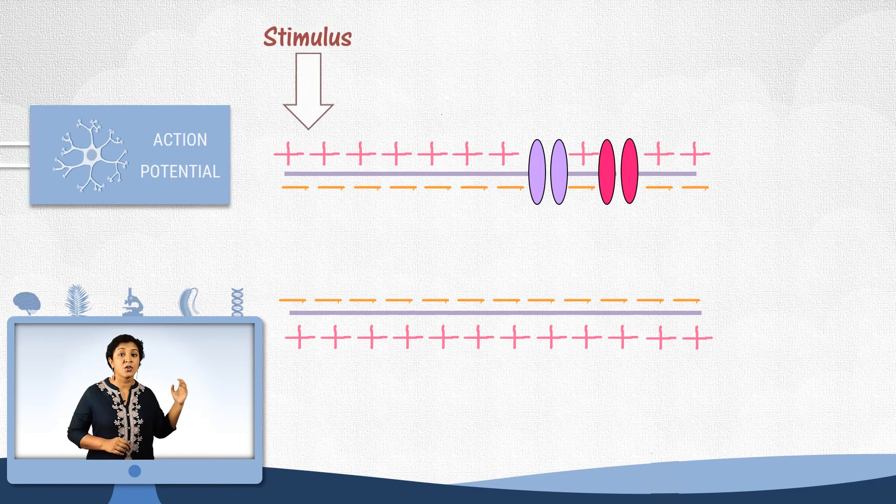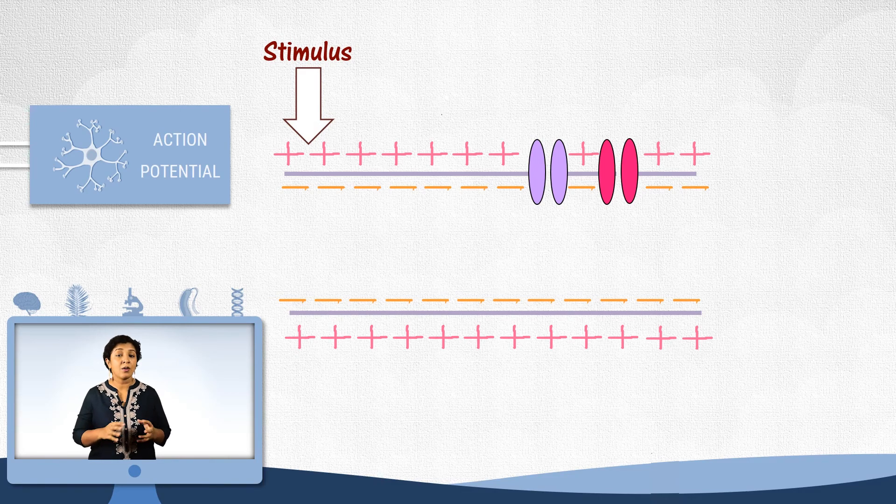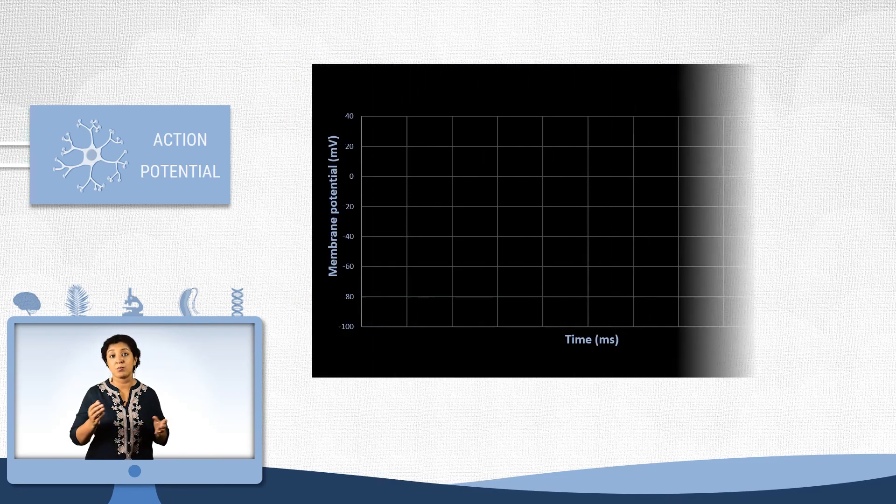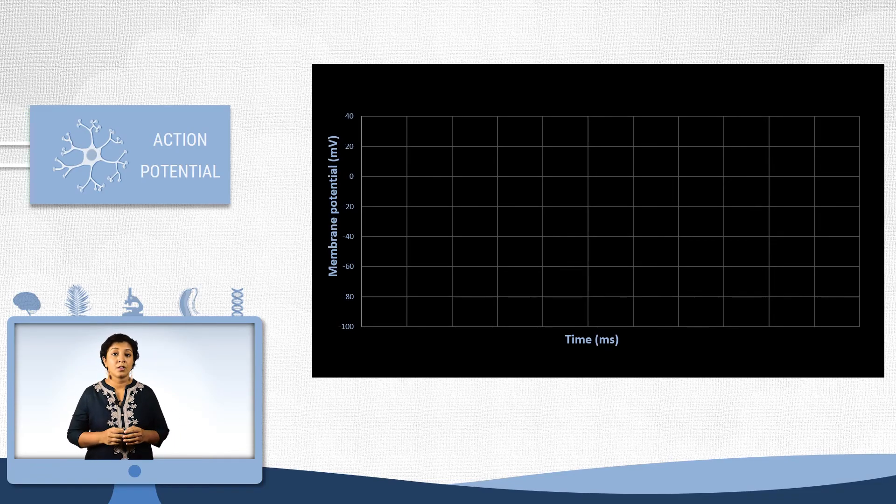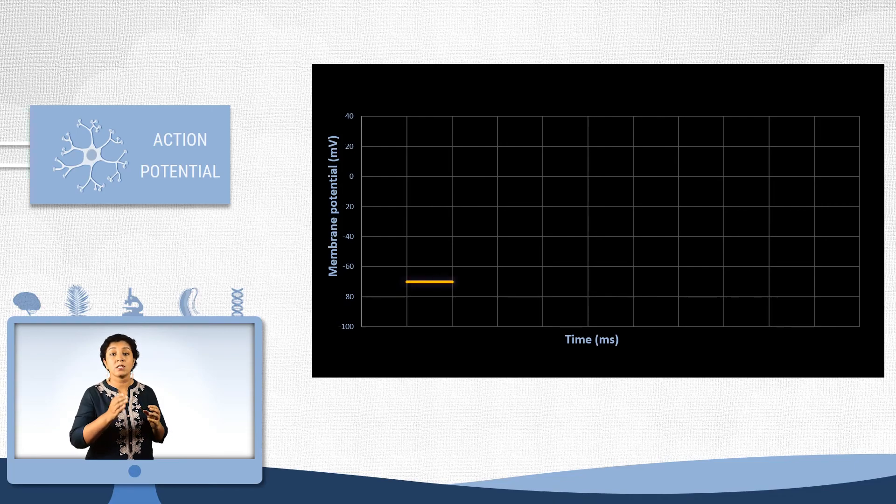Let us assume a stimulus has reached the neuron. Now to see how the membrane potential changes, let's plot a graph. Let's plot membrane potential against time. The membrane potential throughout the neuron at the resting state is minus 70mV. This is known as the resting membrane potential.